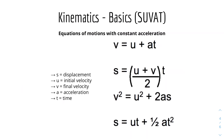Now we have SUVAT — some physics equations of motion. These are only valid for constant acceleration. The four equations are: V = U + AT; S = ((U + V) / 2) × T; V² = U² + 2AS; and S = UT + ½AT². Where S is displacement, U is initial velocity, V is final velocity, A is acceleration, and T is time.